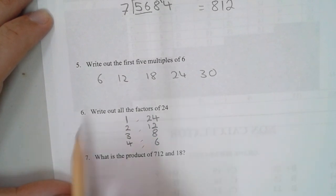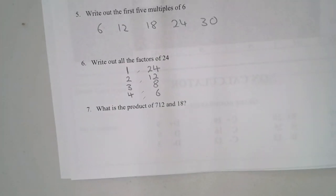The first multiple of 6, 1 times 6, is 6. So that's 6, 12, 18, 24, 30. Write out all the factors of 24. I prefer to do it as a table so I don't miss anything. 1 times 24, 2 times 12, 3 times 8, 4 times 6. 5 doesn't, then I'll be back into 6. There are 8 factors total.